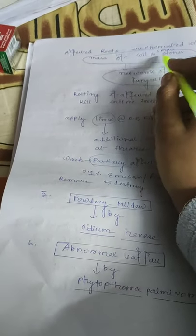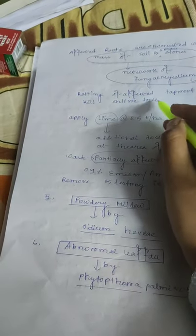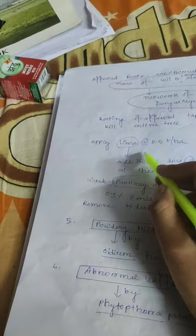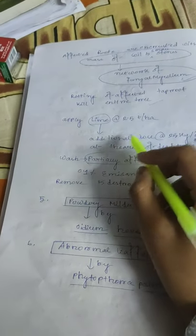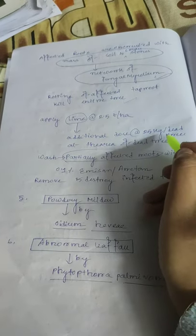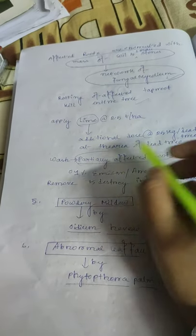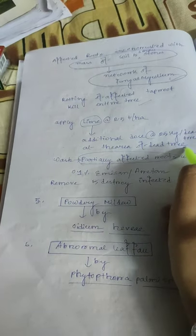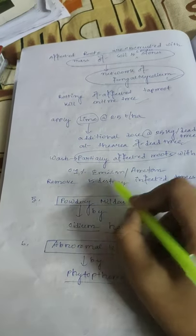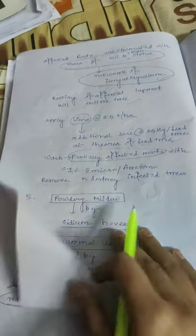Brown root disease of rubber is caused by Phellinus noxius. Affected roots are encrusted with a mass of soil and small stones, and a network of fungal mycelium is present. Rotting of the affected tap root will kill the entire tree. Apply lime at the rate of 2.5 tons per hectare, with an additional dose of 25 kg per dead tree at the area of the dead tree. Wash partially affected roots with 0.1% emulsion or aryton, and remove and destroy infected trees.